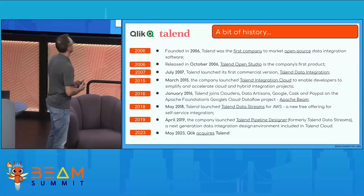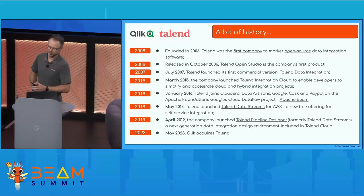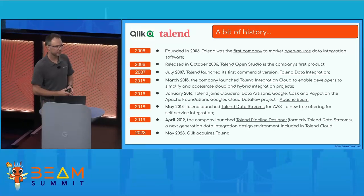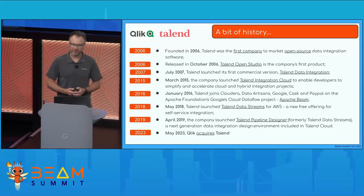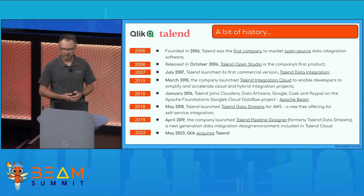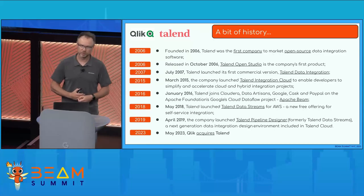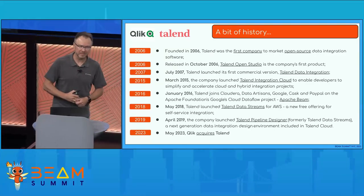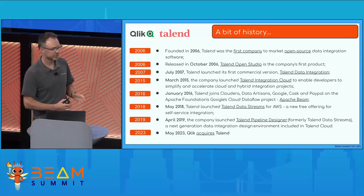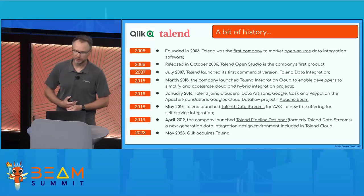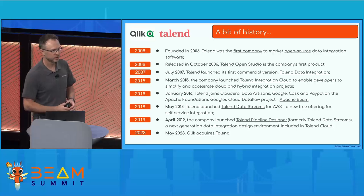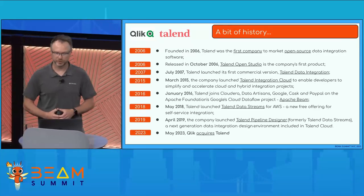Talend was founded in 2006 as the first company to bring open-source data integration software to the market. We released two main products: Talend Open Studio, an open-source product, and its private version called Data Integration. In 2015, as people wanted to run data processing tools on the cloud, we released a Talend integration tool for that. In 2016, with other companies, we started to work on and help promote Apache Beam — at that time an incubator project — to become a top-level Apache Software Foundation project.